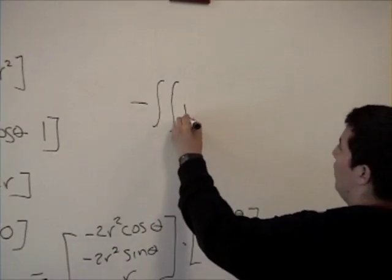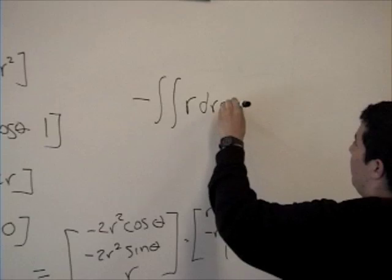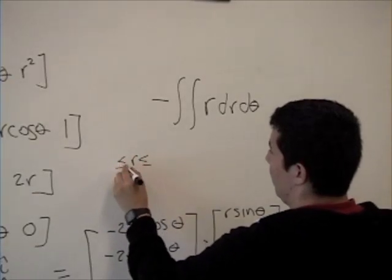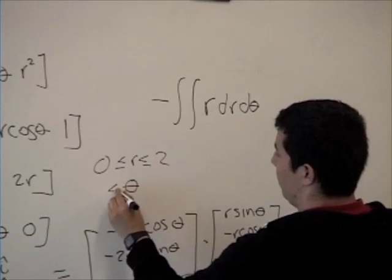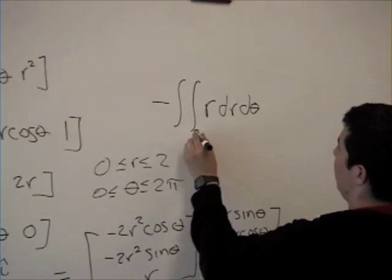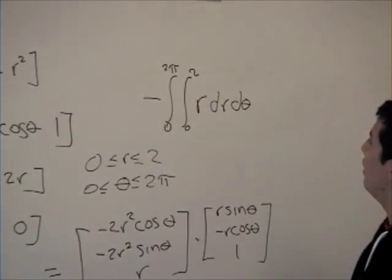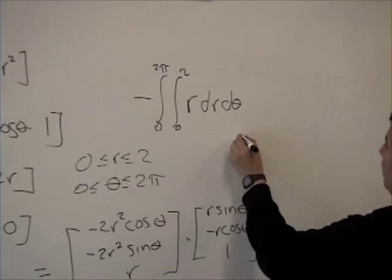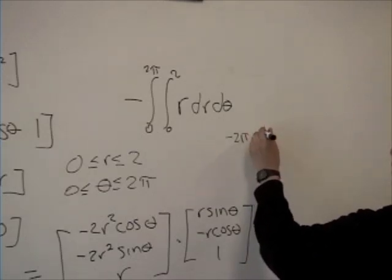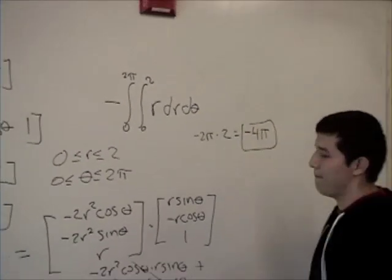So we set up our integral with respect to r and θ. Our limit for r is going to be from 0 to 2, and θ is going to be from 0 to 2π. And we just compute our integral, which is -2π times 2, which is -4π.